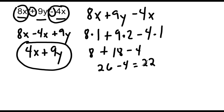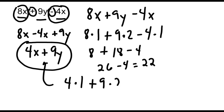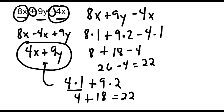Now we take our simplified expression and do the same thing, substituting the same values. For x we substitute 1, and for y we substitute 2. Evaluating: 4 times 1 is 4, plus 9 times 2 is 18. And 4 plus 18 is equal to 22. So if you come up with the same value for the original expression and your simplified expression, then you have simplified correctly.